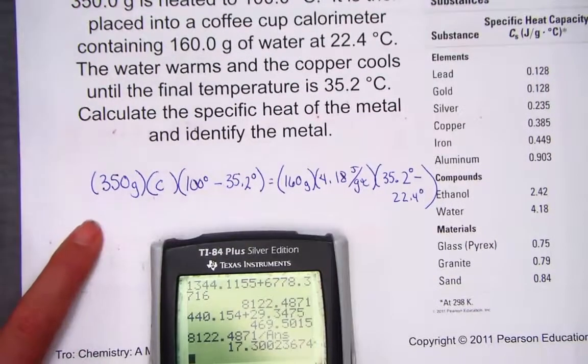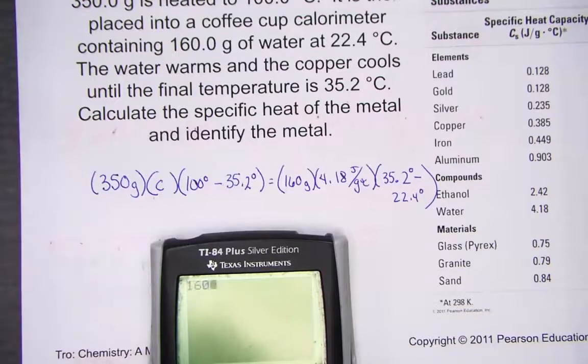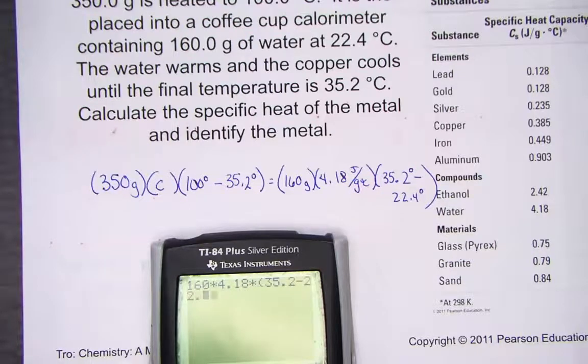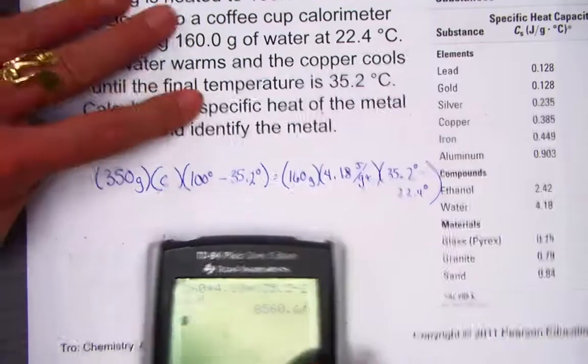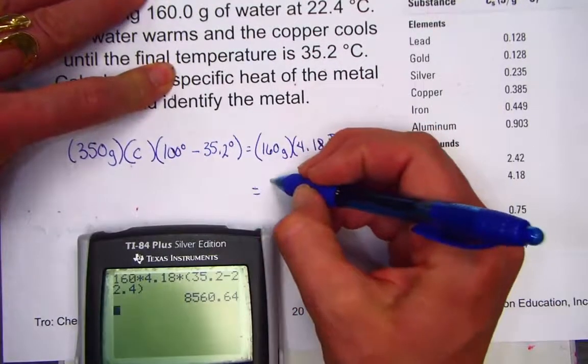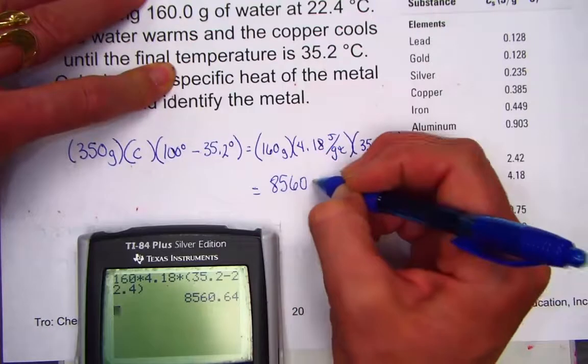Let's start some algebra. Let's simplify the right hand side. 160 grams of water times 4.18 specific heat for water times the change in temperature, the difference between 35.2 and 22.4. So when I simplify the right side of our equal, I get 8560.64.